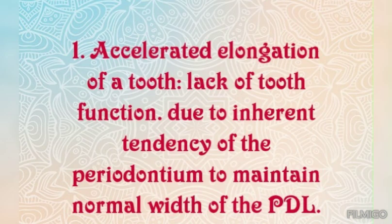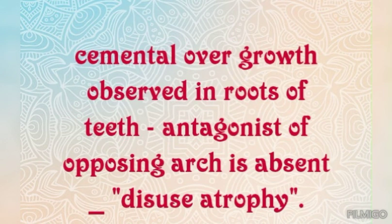The first cause is accelerated elongation of a root. The accelerated elongation of the tooth occurs due to lack of antagonist, that is lack of tooth function, and due to the inherent tendency of the periodontium to maintain normal width of the PDL. If cemental overgrowth is observed in the root of teeth for which the antagonist of the opposing arch is absent, it is called disuse hypertrophy.